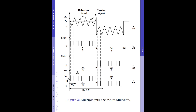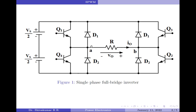Further, the frequency of the inverter output is determined by the frequency of the reference signal, which is the rectangular signal. Regarding the generation of base drive pulses, when both the reference signal and the carrier signal are positive and overlapping, base drive pulses will be generated for transistors Q1 and Q2.